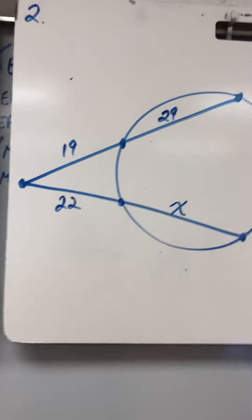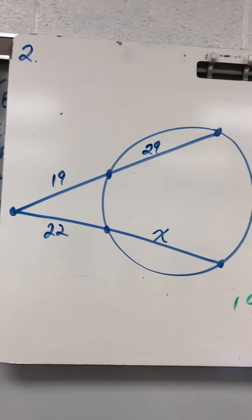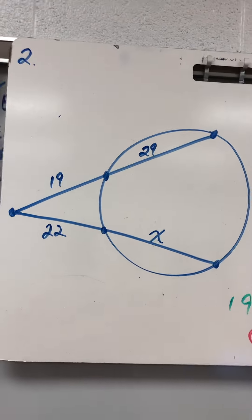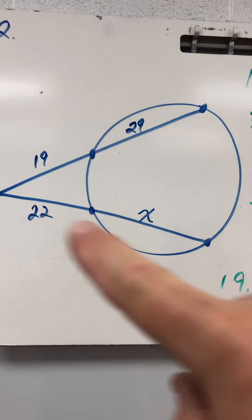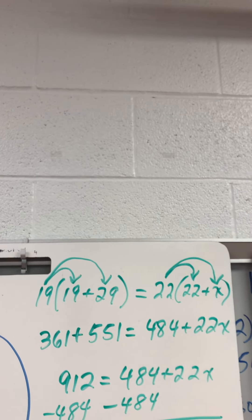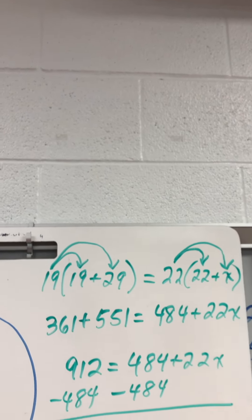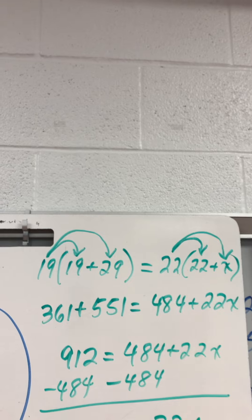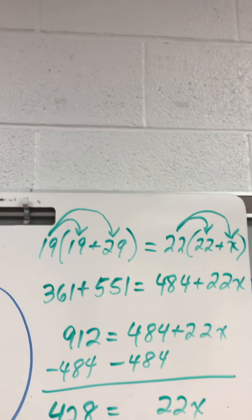Over here, same thing. 19 times 19 plus 29 equals 22 times 22 plus X. Distribute both. You get that. 912 equals 484 plus 22X, minus 484.